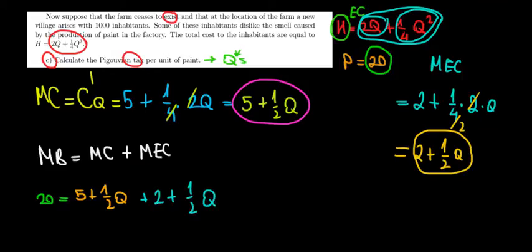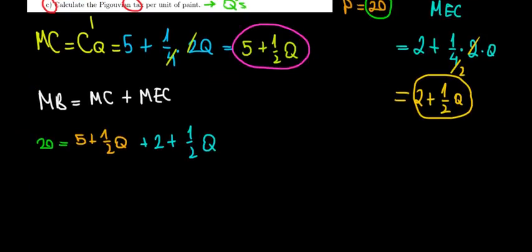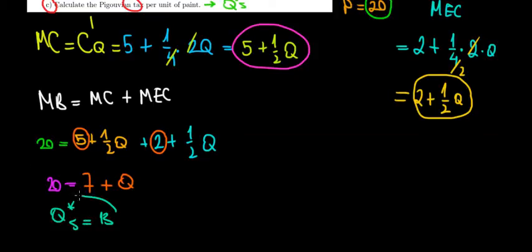Let's solve the math to see what we get. So we're left with 20 equals, on this side, 5 plus 2, which is equal to 7, and a half q plus a half q makes 1 q. So 7 plus q. The socially optimal level of the paint would be 20 minus 7, which is equal to 13. Now with this in mind, how can we make the company produce 13 units only?